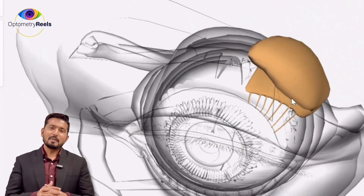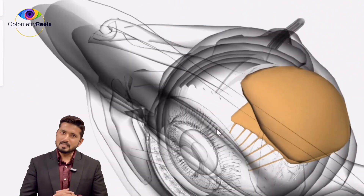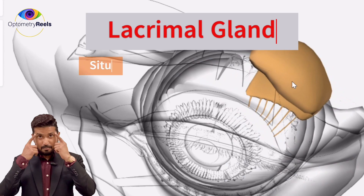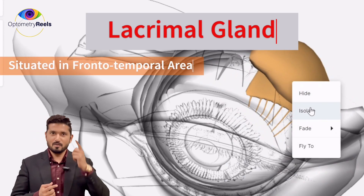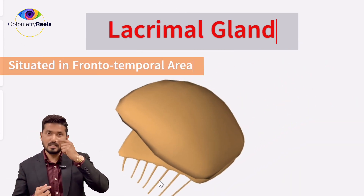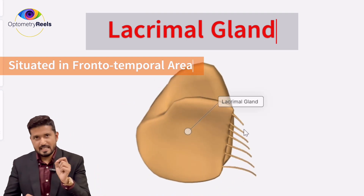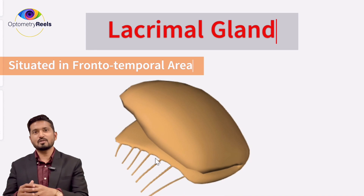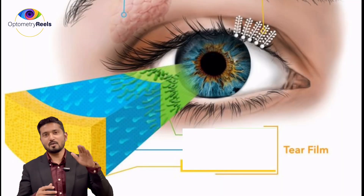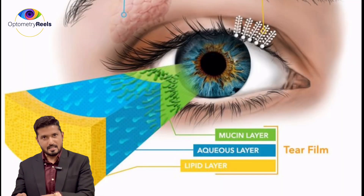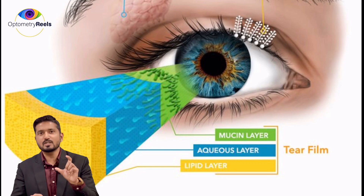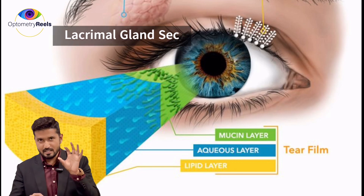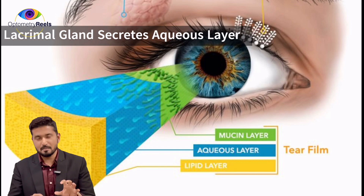One of the major parts of this lacrimal apparatus is the lacrimal gland, which is situated in the frontotemporal area of the eye behind the frontal bone in the lacrimal fossa. The secretion of this gland is the watery part of the tear film. The tear film has three different layers: on the top we have a lipid layer, at the bottom we have a mucin layer, and in between we have a watery layer, also known as the aqueous layer, which is secreted by the lacrimal gland.